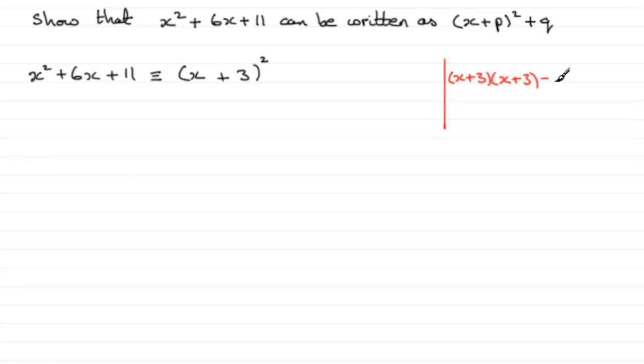And that is identical to x times x, which we know is x². Then you get 3x and another 3x, so that's 6x. And then 3 times 3 is 9.